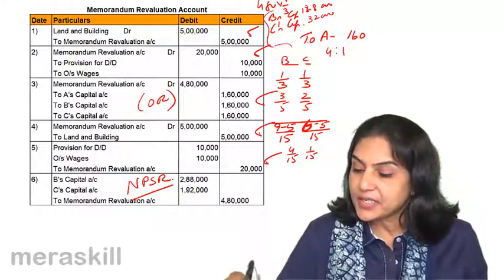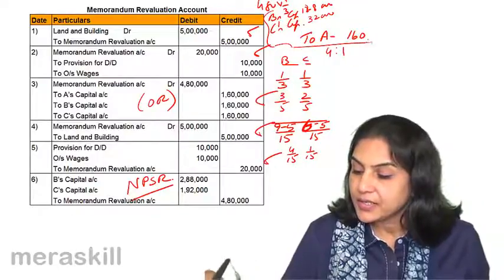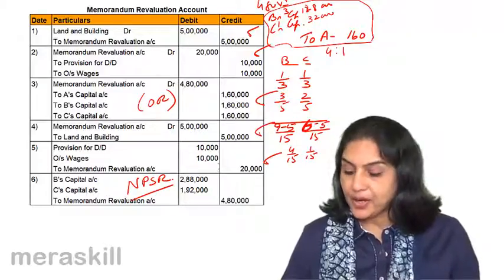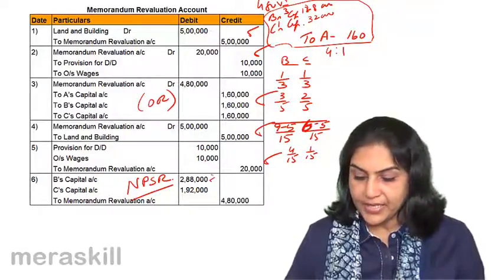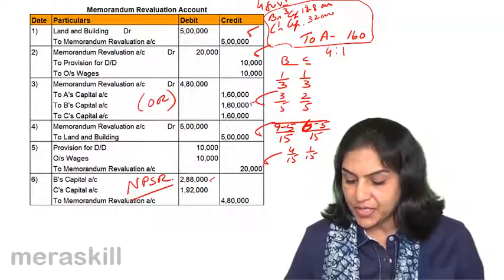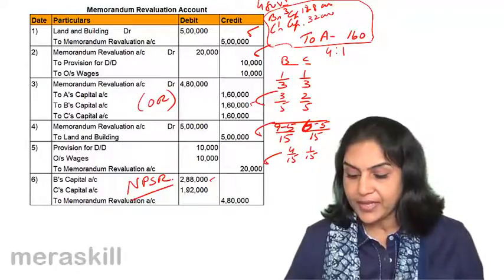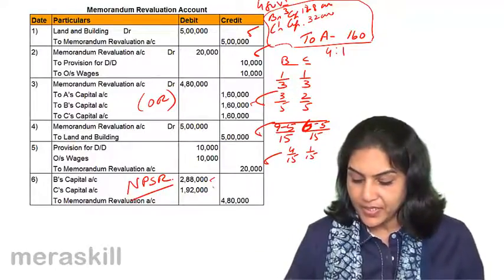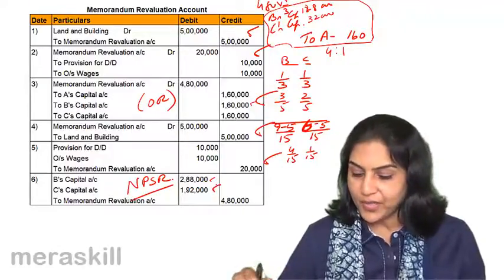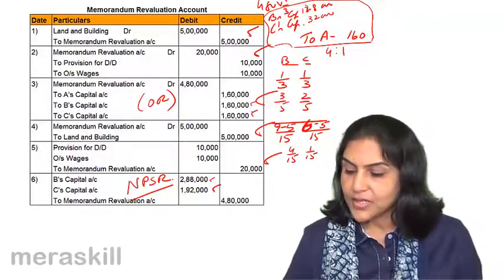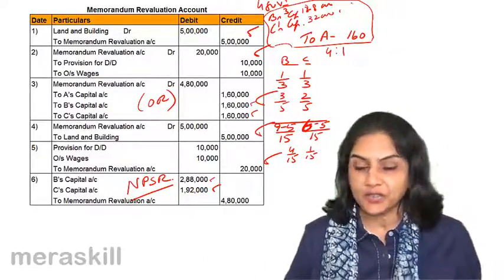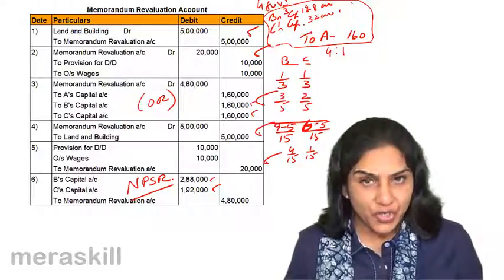B's capital account has been debited with 2,80,000 and credited with 1,60,000 — the difference is 1,28,000. Similarly, C's capital account has been debited with 1,92,000 and credited with 1,60,000, therefore C's capital account net debit is 32,000. This is the net effect of the entries of the memorandum revaluation account.